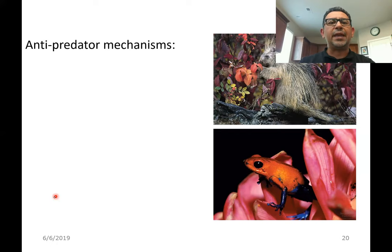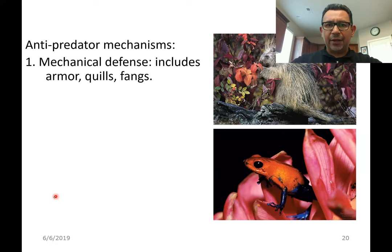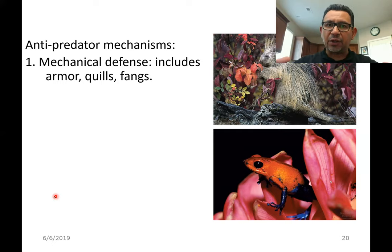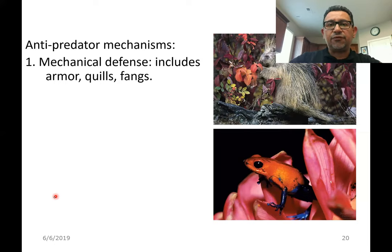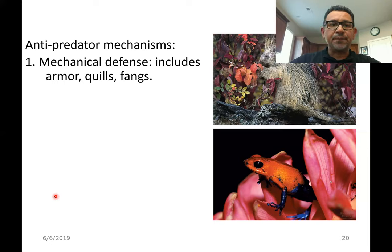We begin by talking about mechanical defenses. Some prey species use armor. For example, tortoises rely on that outer covering — many predators will not dare eat a tortoise because their fangs or teeth can never penetrate that protective shield. Armor can also be seen in animals like armadillo. The shell of snails, for example, can be a good example of a mechanical defense.